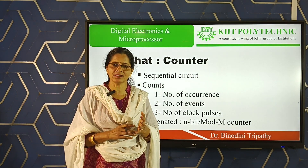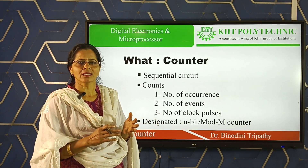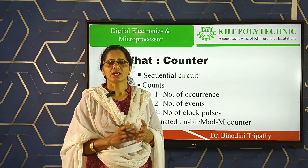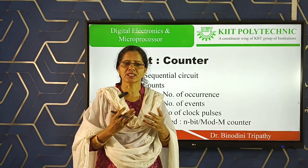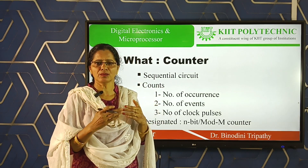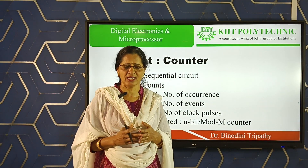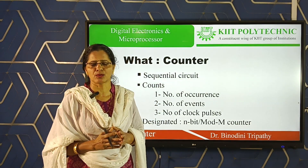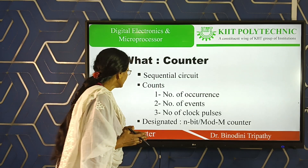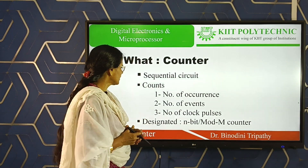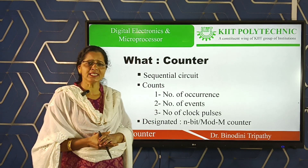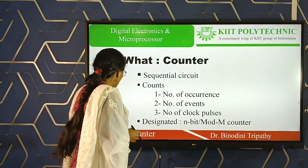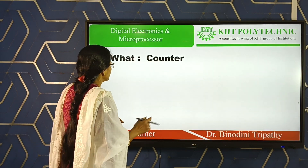So now, to be clear: first, it is a digital device; second, it is a sequential type of digital device; third, it is used for counting purpose; fourth, it counts the number of occurrences of an event or number of clock pulses of a signal or number of any sequence. We can count by this device. Next, how do we designate a counter? Let us discuss.